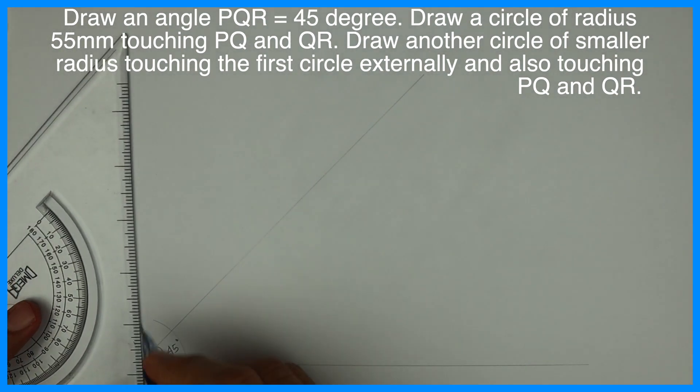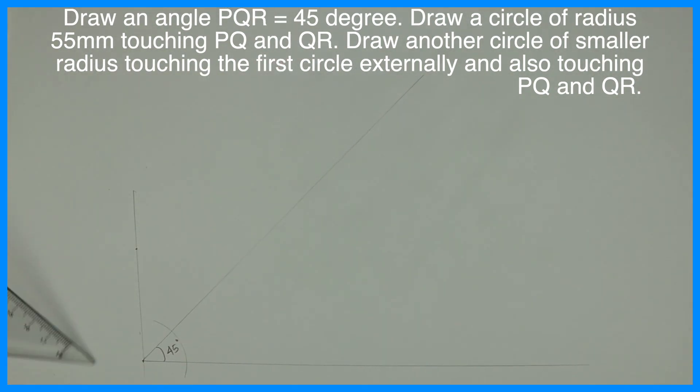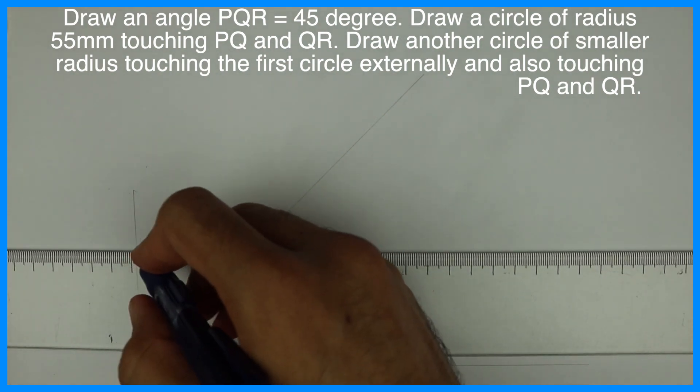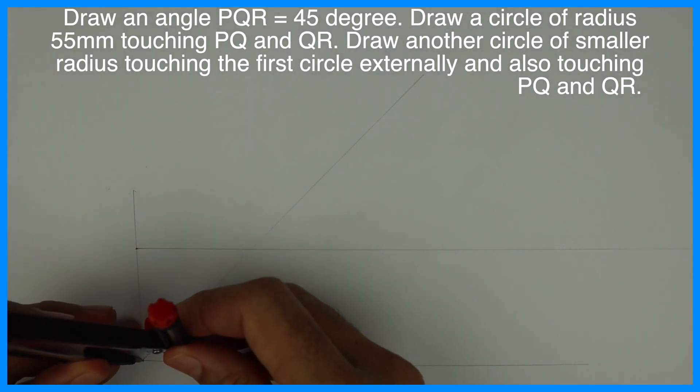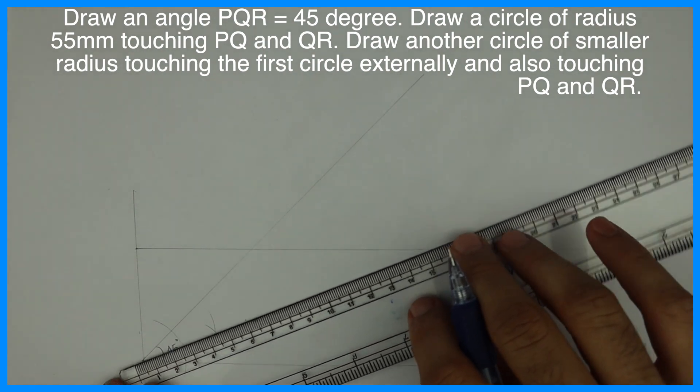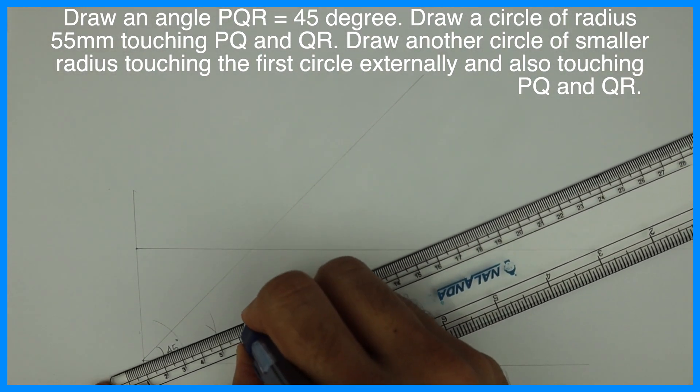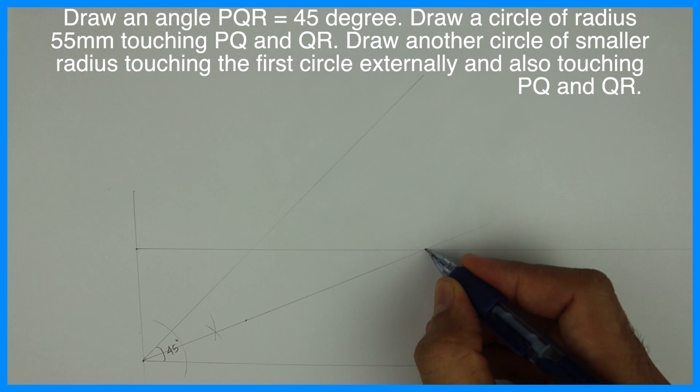Now they have given 55 mm. So you go up by 55 mm and from there you draw a horizontal line. And you bisect this 45 degree angle. See this. Wherever your bisector and that 55 mm line will intersect, that is point A.